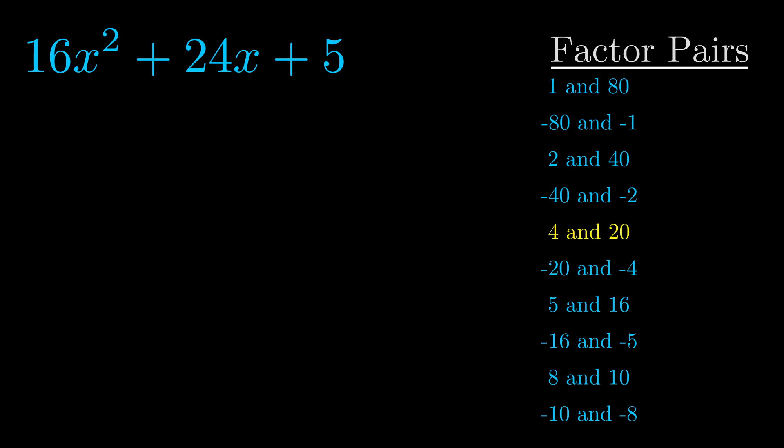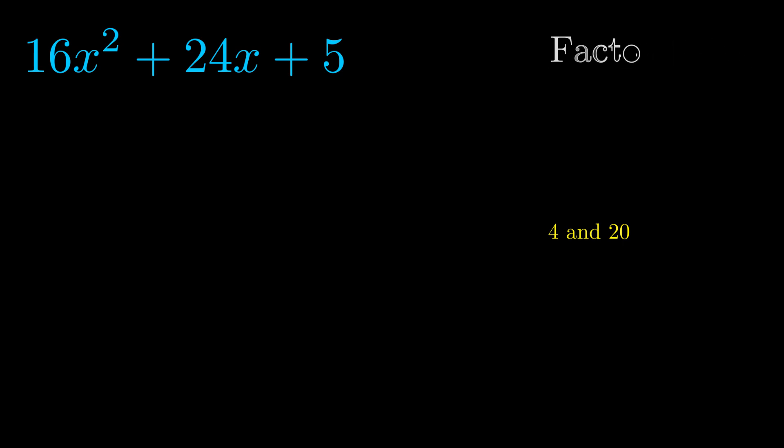And really this is the only factor pair that we need. Now once we have this factor pair, what we want to do is we want to use it to split up the b value.